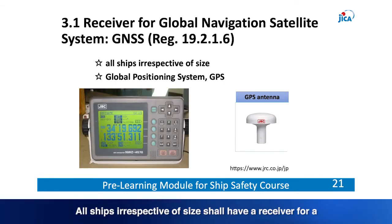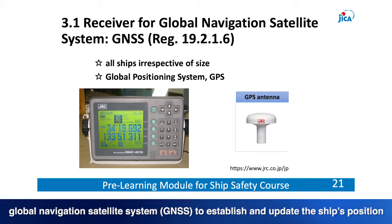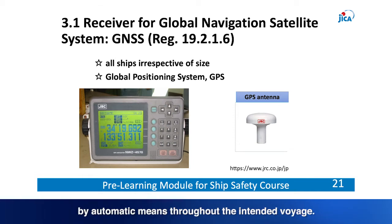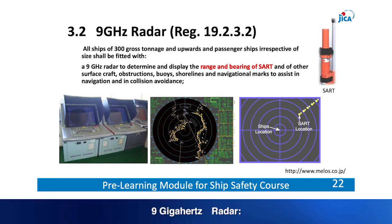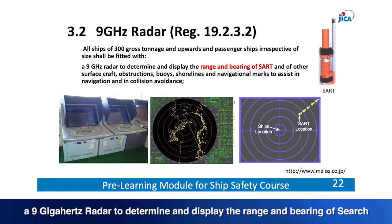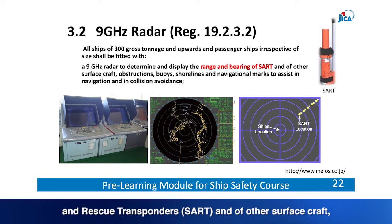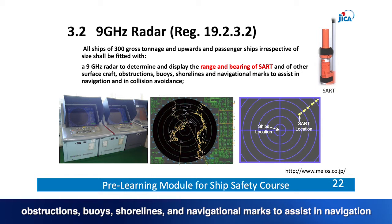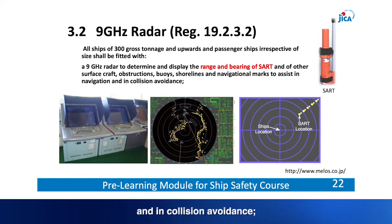All ships, irrespective of size, shall have a receiver for a Global Navigation Satellite System (GNSS) to establish and update the ship's position by automatic means throughout the intended voyage — GPS is one of the systems. For 9 GHz radar: all ships of 300 gross tonnage and upwards and passenger ships irrespective of size shall be fitted with a 9 GHz radar to determine and display the range and bearing of SARTs and other surface craft, obstructions, buoys, shorelines and navigational marks to assist in navigation and collision avoidance.